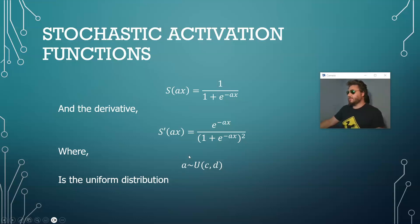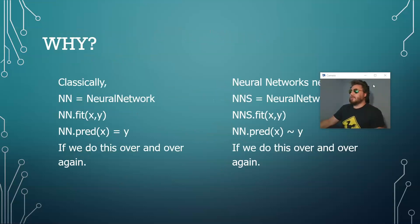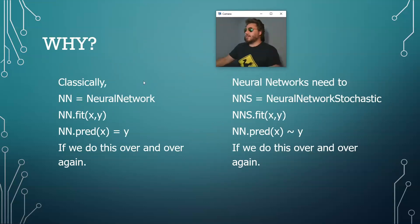Okay just for this example. So we ask ourselves why, why do we do this? Well classically if we have a neural network, NN, and we fit that neural network with x and y data and then we do NN.pred(x) we're going to get y or very close, right?